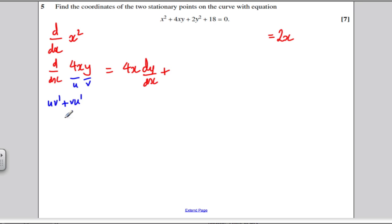Plus v, which is y, times the derivative of u, which would be 4. So, I'm going to get plus 4y. So, this simply tidies up as 4x dy by dx plus 4y.